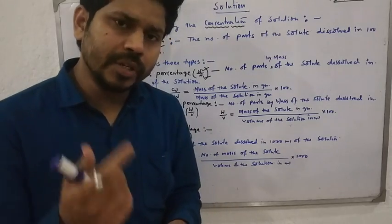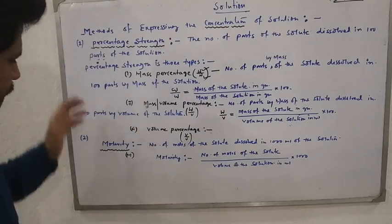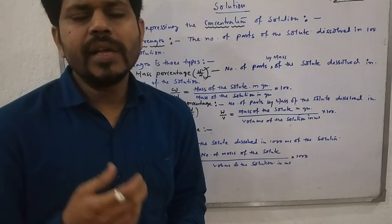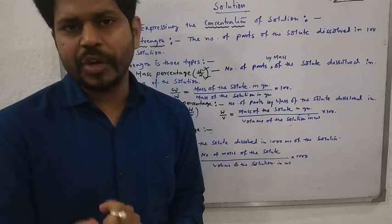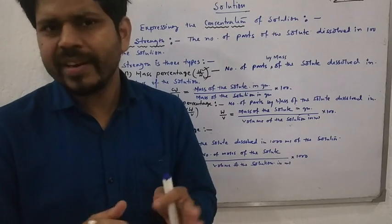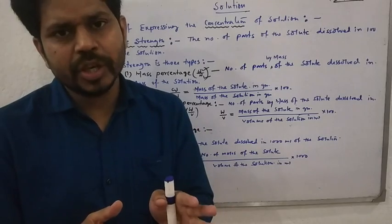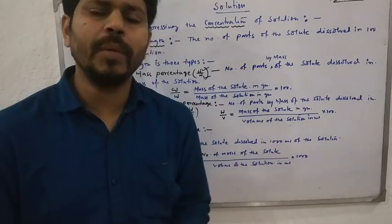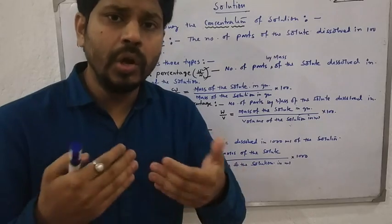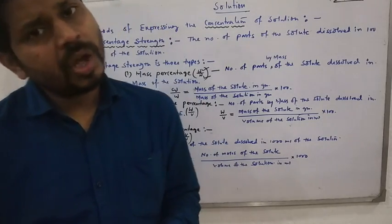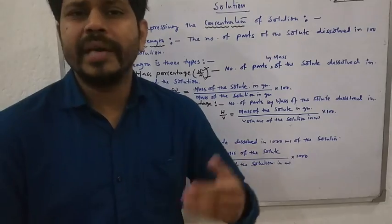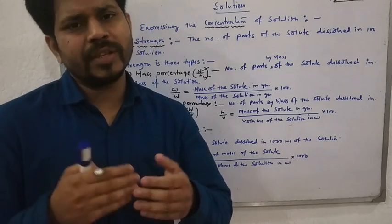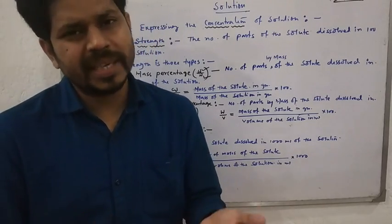Today we are going to talk about those important and helpful terms by which we can express the concentration of solutions. These terms are: first, percentage strength; second, molarity; then molality; then normality; then mole fraction; parts per million; and strength in liter. So total 7 concentration terms are there. If their value is low, the solution is called dilute; if their value is high, it is called concentrated.